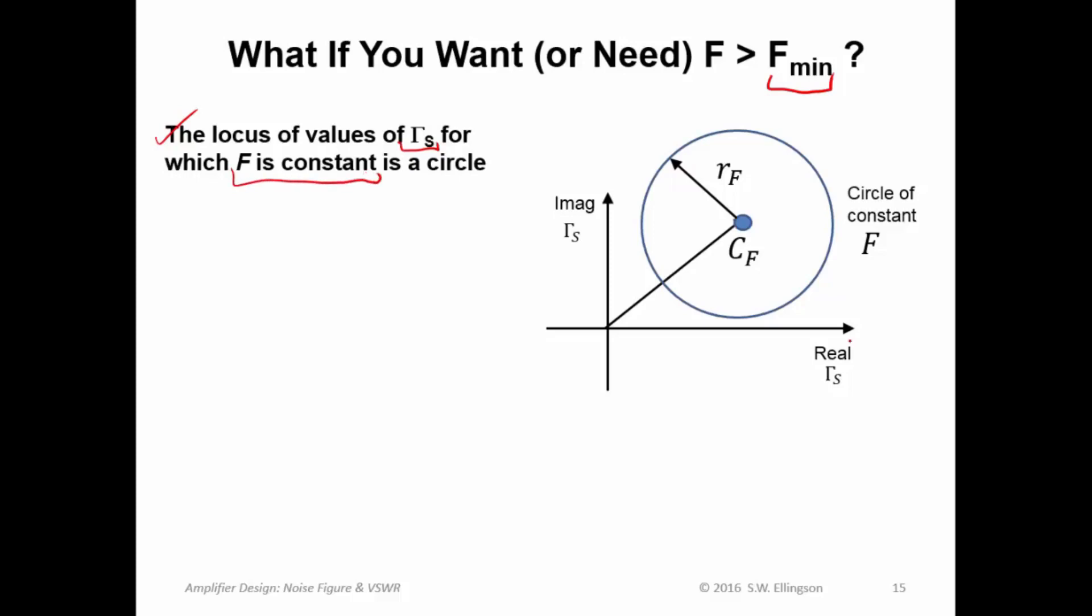If we make a map of the real part versus the imaginary part of the source reflection coefficient, it turns out that reflection coefficients that yield constant noise figure are all on a circle. The center of that circle we can call C_F, and the radius of that circle we can call R_F.